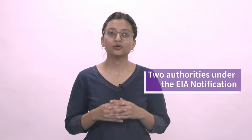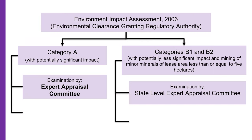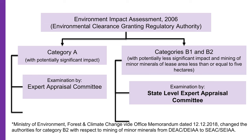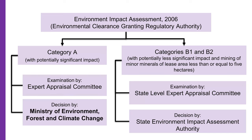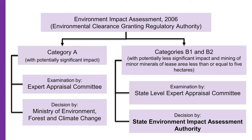In the EIA notification, there are two types of authorities involved. One which assesses the impact of the project, monitors the steps of the EIA process, and provides its recommendation on whether or not prior environmental clearance should be granted. It is called the Expert Appraisal Committee for Category A projects and the State Level Expert Appraisal Committee for projects in categories B1 and B2. However, a final decision is taken by the regulatory authorities: the Ministry of Environment, Forest and Climate Change for Category A projects on the basis of recommendations from the Expert Appraisal Committee, and the State Environment Impact Assessment Authority for projects in categories B1 and B2 on the basis of recommendations from the State Level Expert Appraisal Committee.